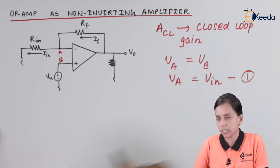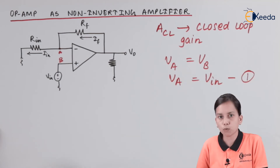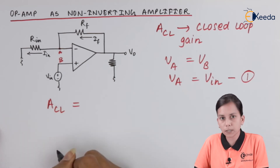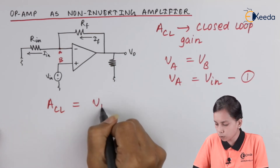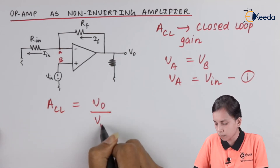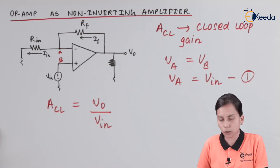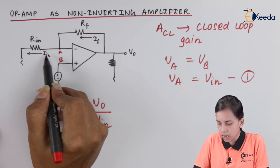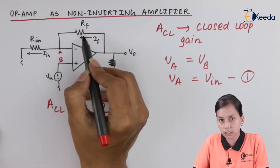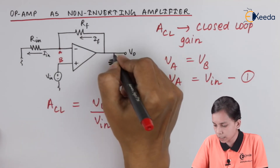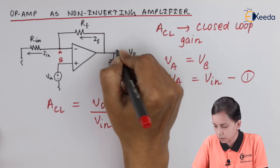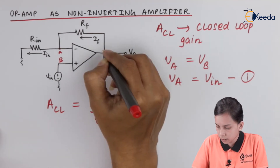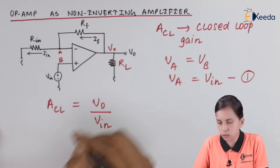Let us call that equation 1. Our purpose is to calculate the value of closed loop gain, that is V_0 divided by V_input. In the circuit we have I_input, I_F, R_L, and V_0.